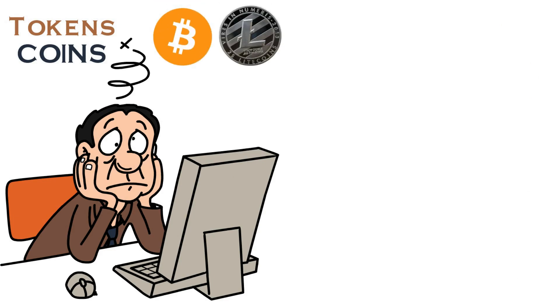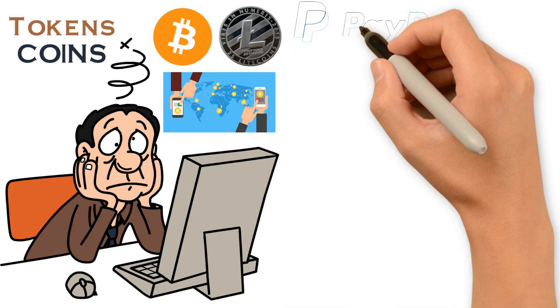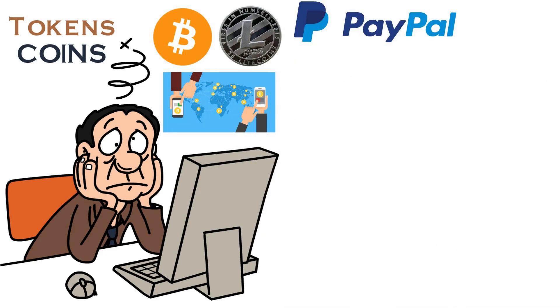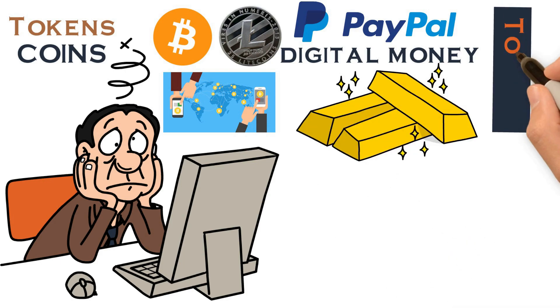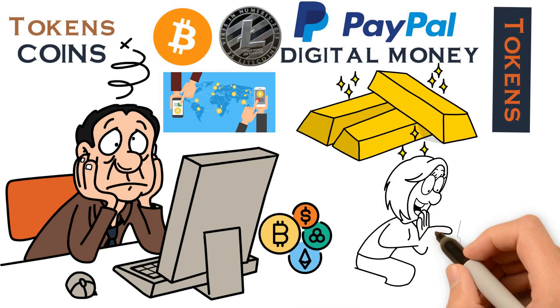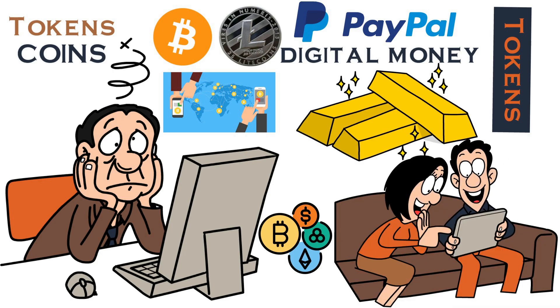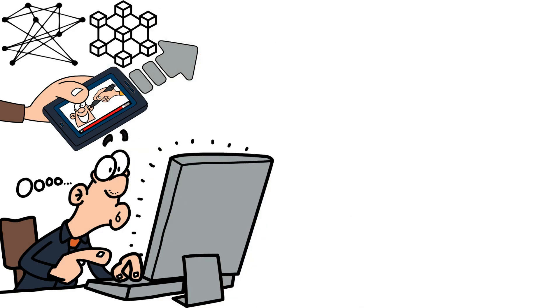Tokens are often confused with coins; however, they are quite different because of their purpose. Coins like Bitcoin or Litecoin are cryptocurrencies, and their purpose is to function as a payment system — like PayPal — however they also serve as digital money or digital gold. Tokens do not serve as a cryptocurrency and are more like products you would use on the platform they were created for.